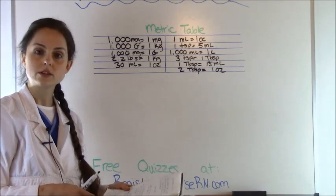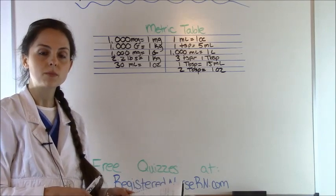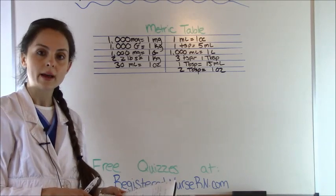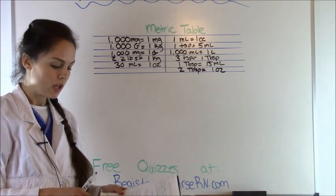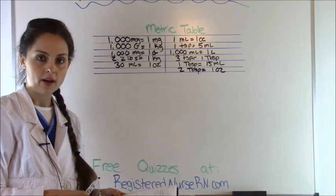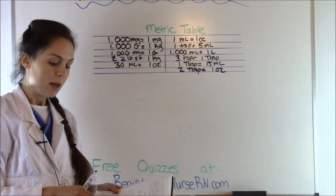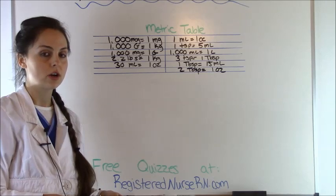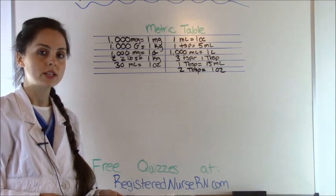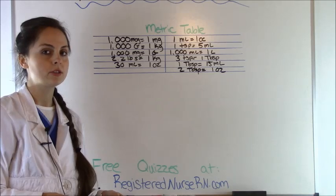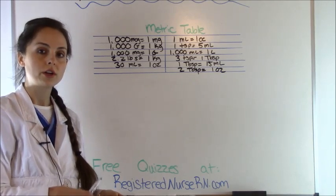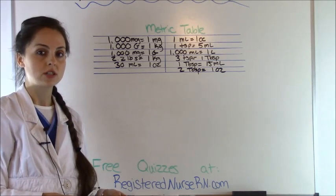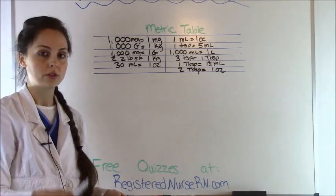The child weighs 64 pounds and the pharmacy gives us a container where every two milliliters is 50 milligrams. So how many milliliters are we going to give per dose? The ibuprofen is dosed per kilogram — every kilogram you're giving six milligrams — so we have to convert 64 pounds to kilograms to determine how many milligrams to give. Anytime you have a weight-based drug problem, which you'll see often with pediatric patients and drugs like heparin, you know it's a multiple-step problem. I always like to begin by solving the patient's weight first.